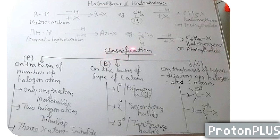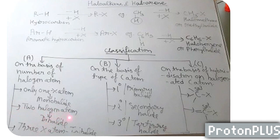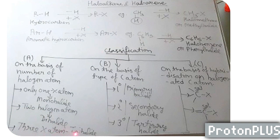Classification of haloalkanes and haloarenes. The first classification is on the basis of the number of halogen atoms. If only one halogen atom is there, then it is a monohalide. If two halogen atoms are there, then it is named a dihalide. If three halogen atoms, trihalide. Similarly, four halogen atoms, tetrahalide. The second classification is on the basis of type of carbon atom.